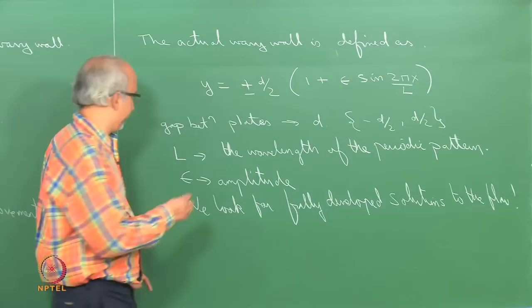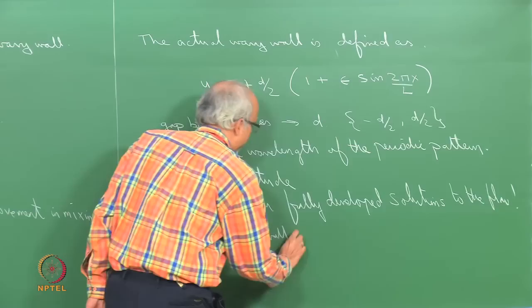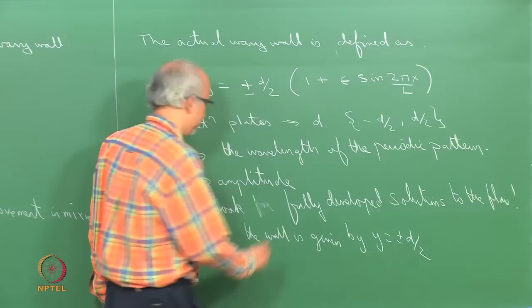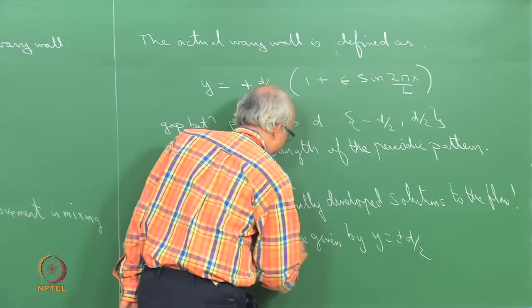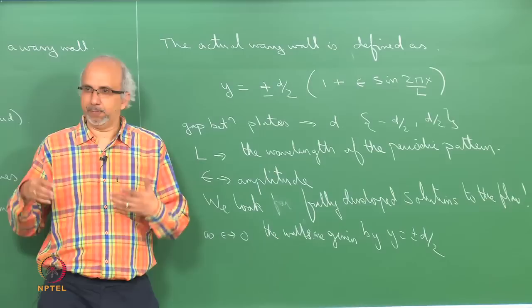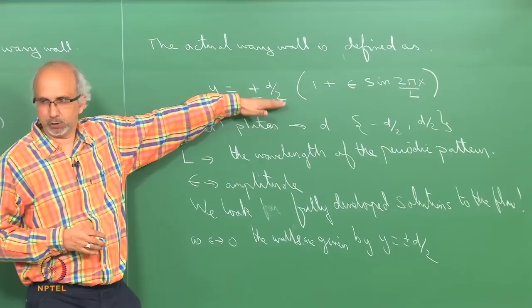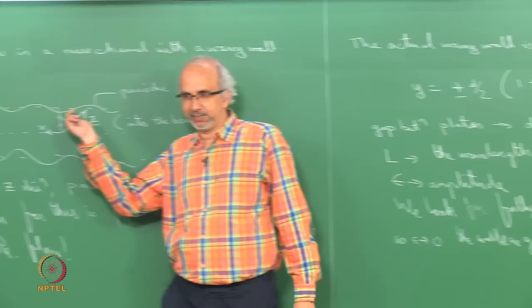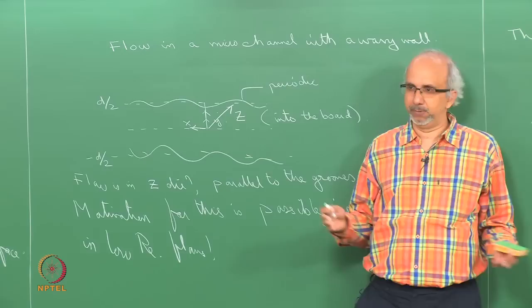As epsilon tends to 0, the walls are given by y equals ±d/2 and we know how to solve that. So basically, we are going to do a perturbation analysis, keeping the fact that this boundary is going to be perturbed about the flat wall. Since we are doing this on the boundary and the domain is being perturbed, this is a domain perturbation problem.